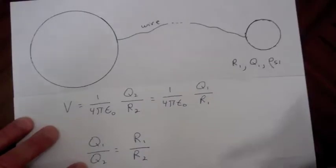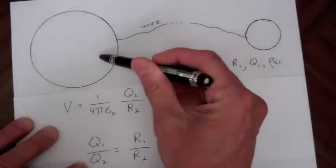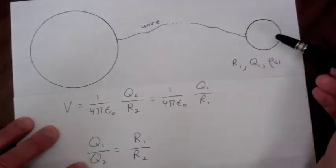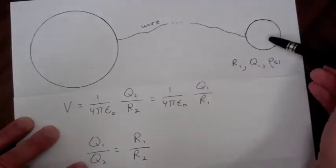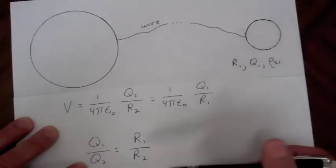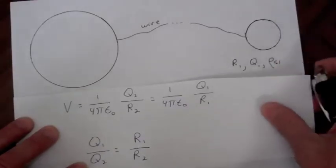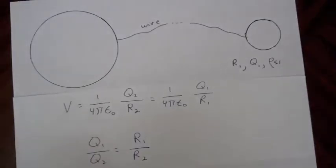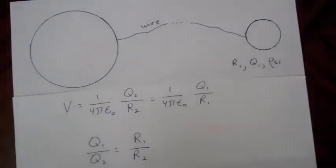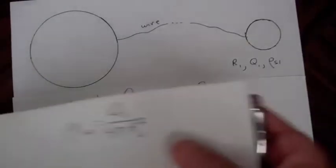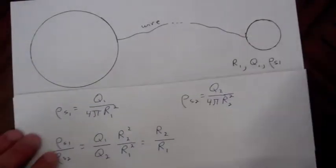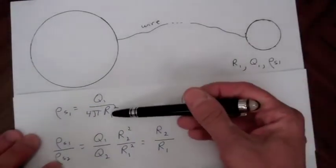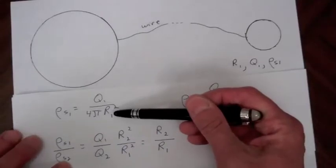So sphere 2 will have a larger amount of charge on it than sphere 1 by the ratio of the radii of the two spheres. Now the surface area of a sphere is 4πR², so the charge density is just the total charge divided by 4πR².